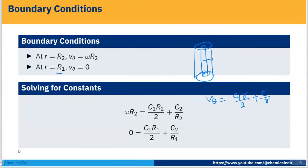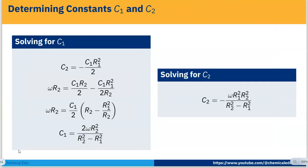Plugging in the boundary conditions: at r = R₂, ω·R₂ = C₁·R₂/2 + C₂/R₂; and at r = R₁, 0 = C₁·R₁/2 + C₂/R₁. Solving these two equations simultaneously gives us C₁ and C₂. From the second equation, C₂ = −C₁·R₁²/2.